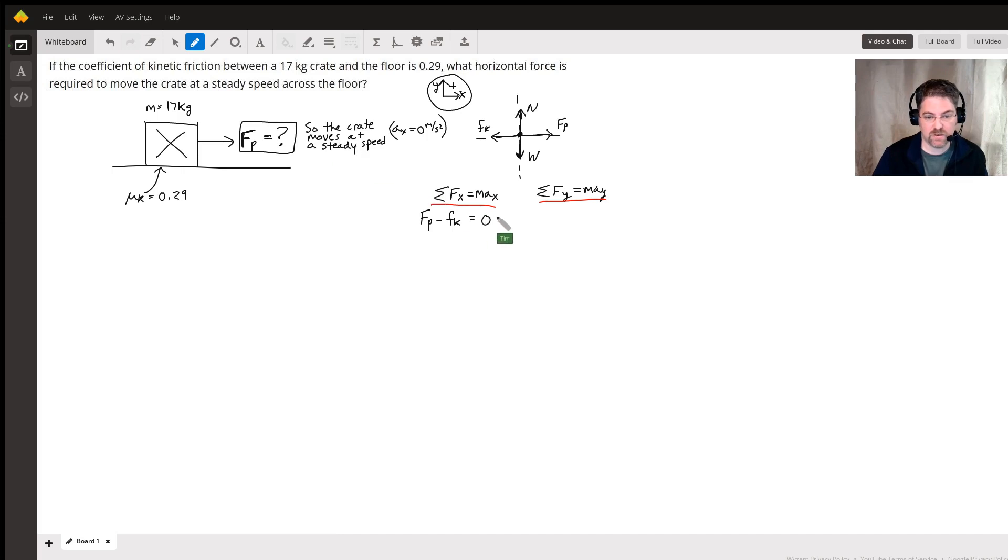We do the same thing in the y direction. We're going to have N as positive because it's pointing up minus W. Does it accelerate at all in the y direction? Well, that would be up or down and this thing doesn't jump up or down, it's only moving sideways, so a_y is zero.